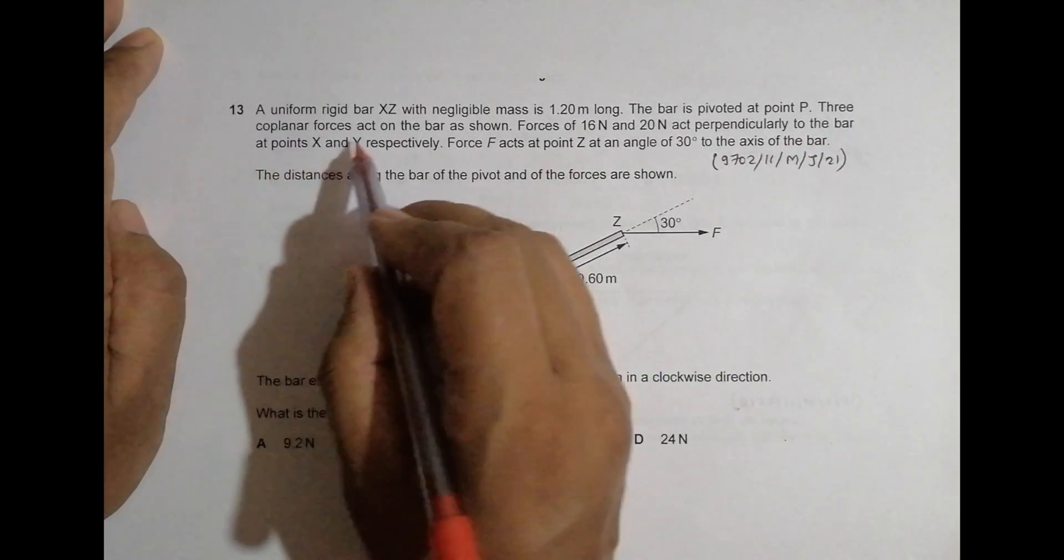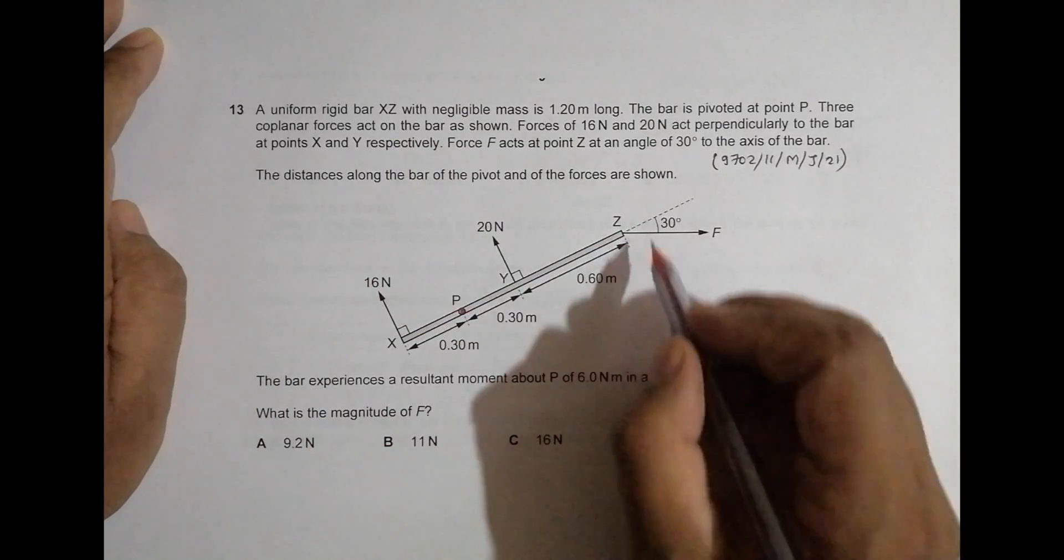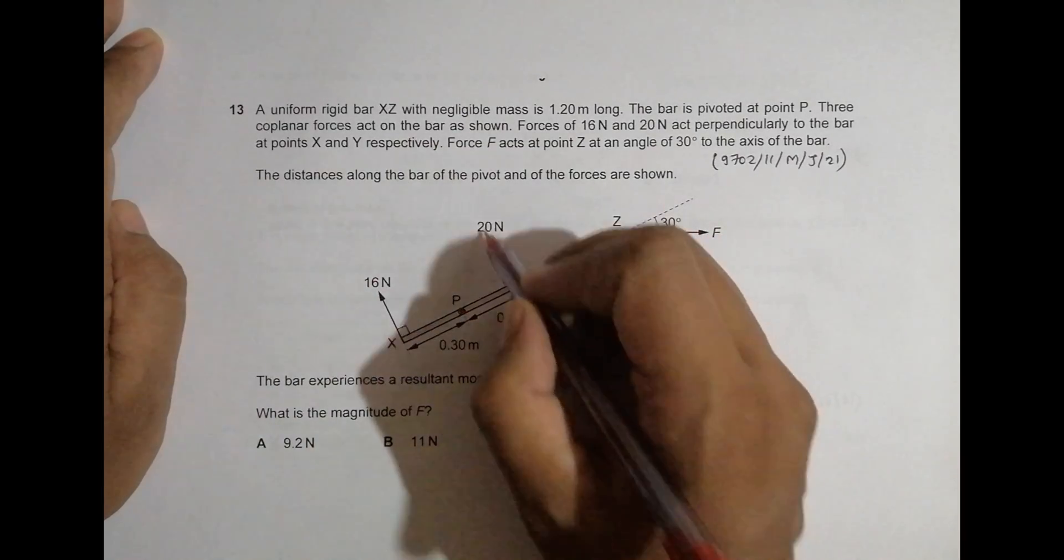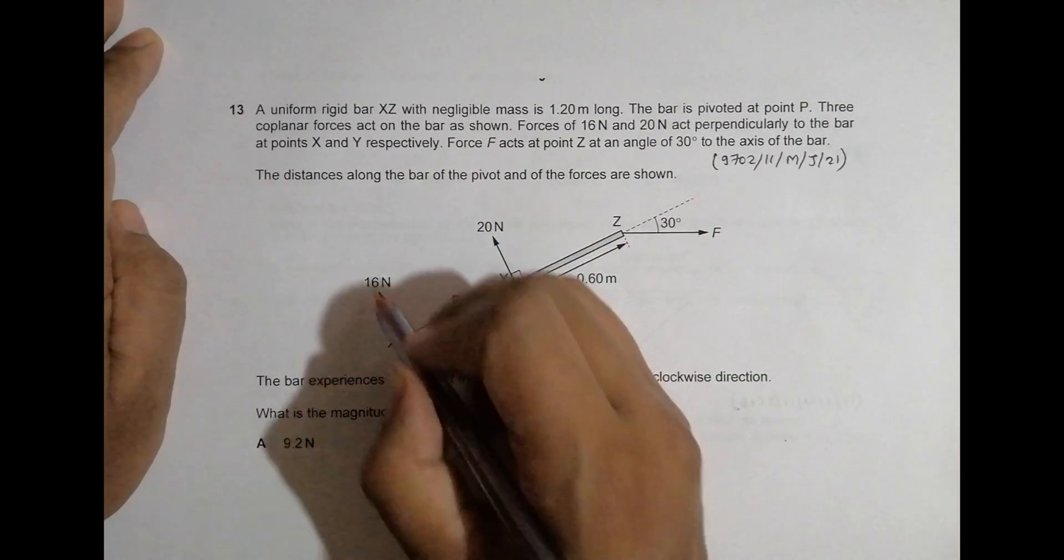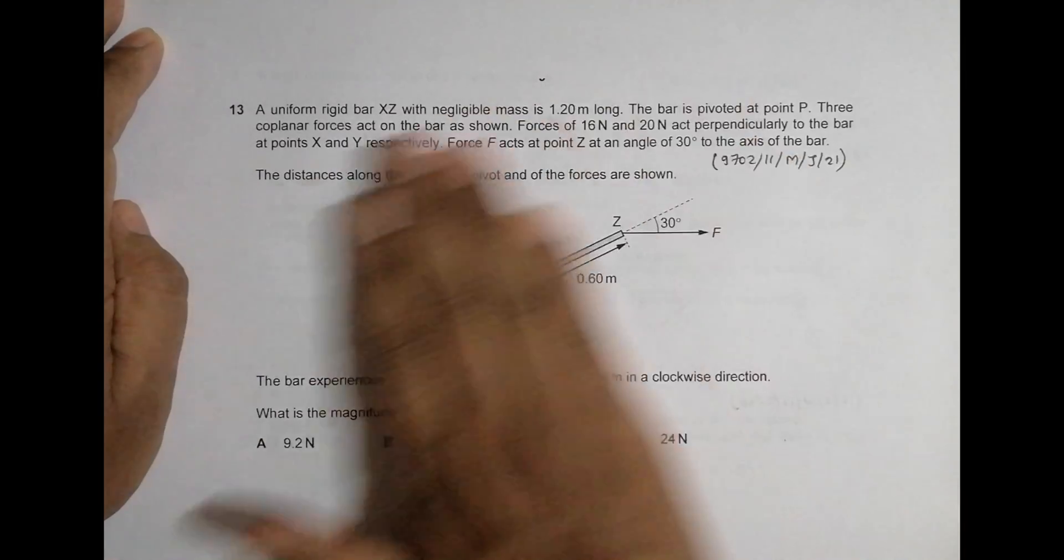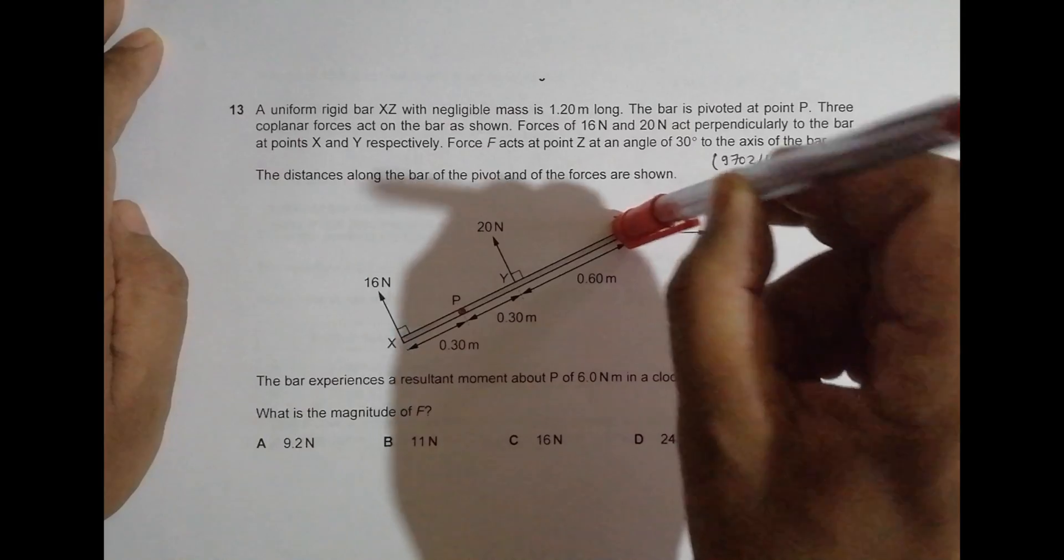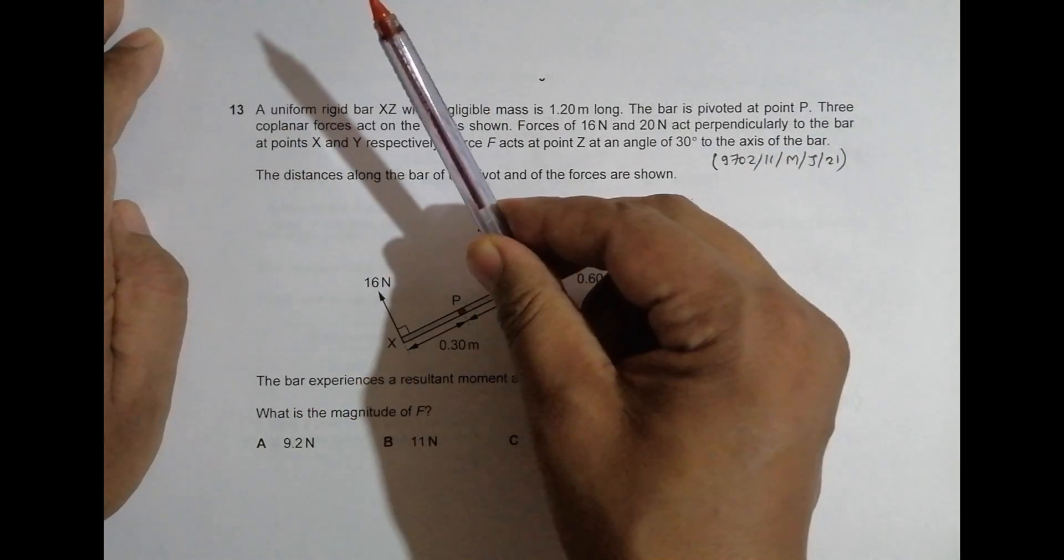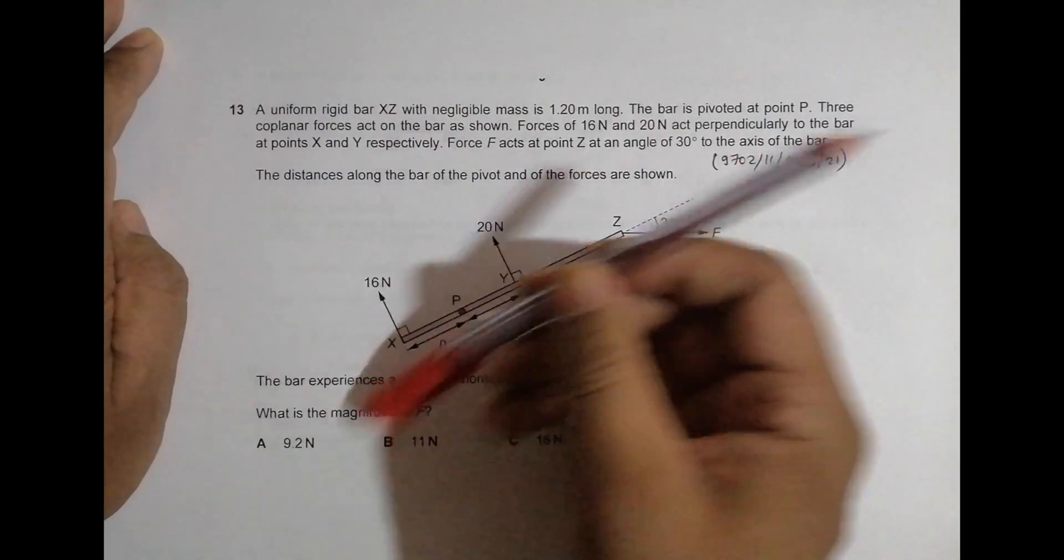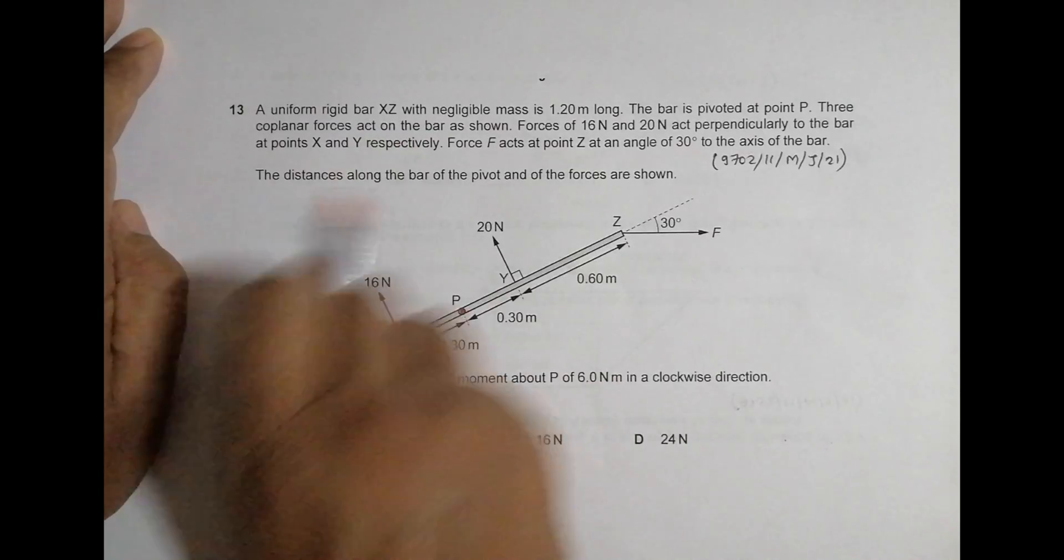Three coplanar forces act on the bar as shown, so the forces are EF, they said 20 Newton and this. So all of them are in this plane surface, it means that none of them is applying like this or maybe like this. So all of them are on this plane surface.